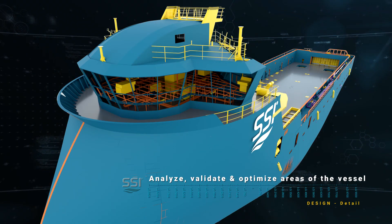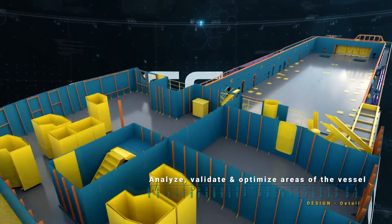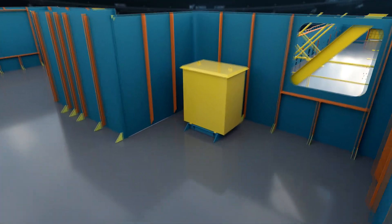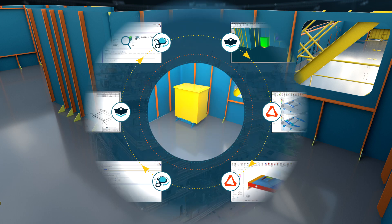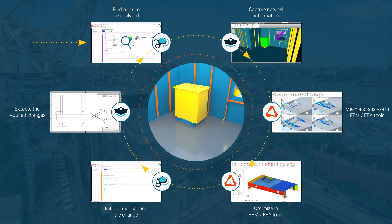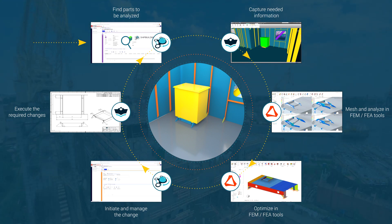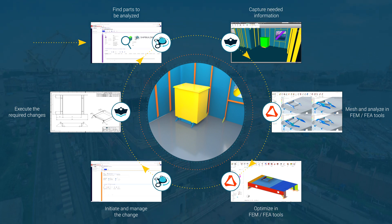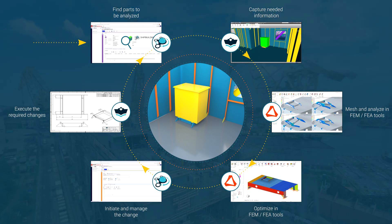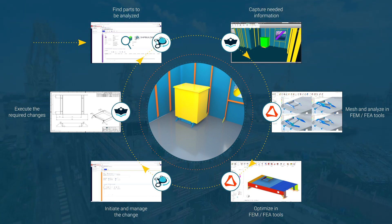There are many cases where a deeper analysis of a particular area is required. Foundations are a great example where we want to minimize weight while still providing adequate support. In these cases, information will be captured from the product model and fed into the analysis software. Once the analysis is performed, we will append the results to the virtual foundation and create an engineering change order to execute the changes.